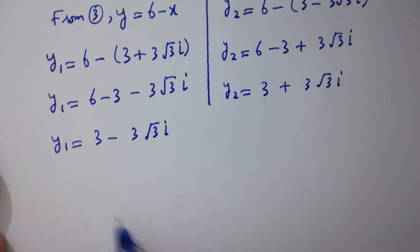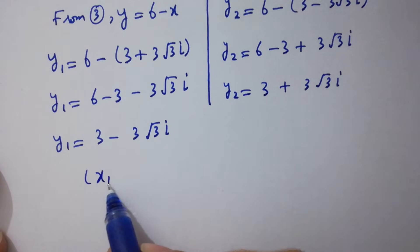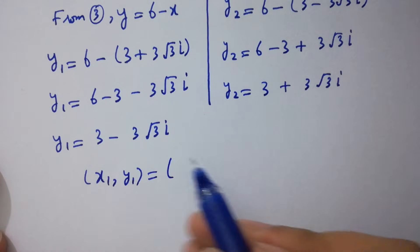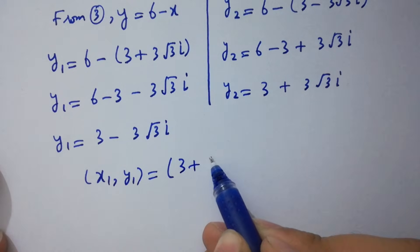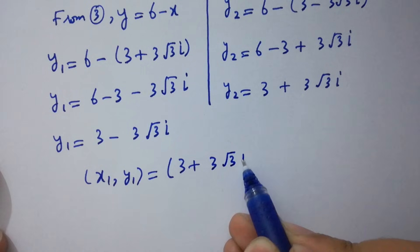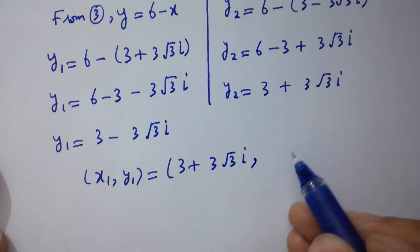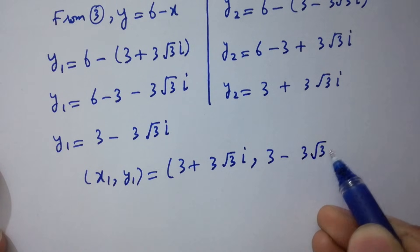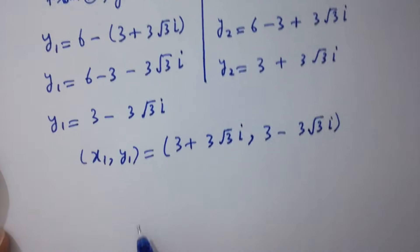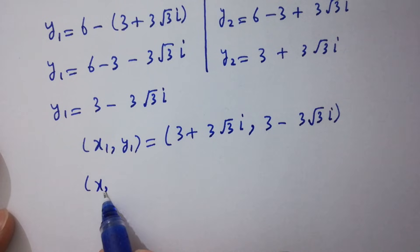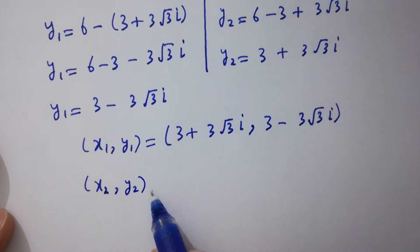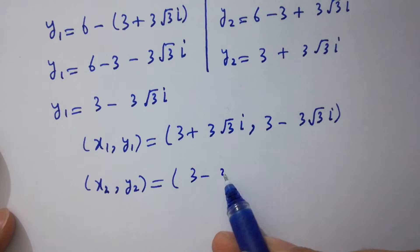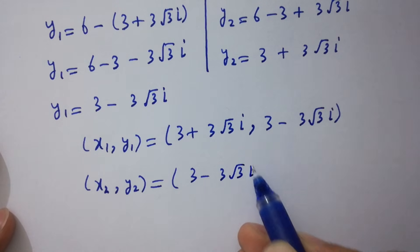So we have the solution pairs: x1, y1 equals (3 plus 3 square root of 3 i, 3 minus 3 square root of 3 i), and x2, y2 equals (3 minus 3 square root of 3 i, 3 plus 3 square root of 3 i).